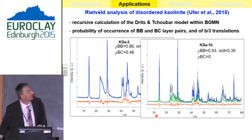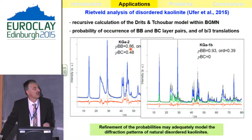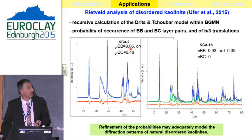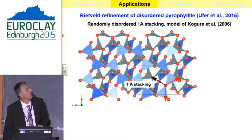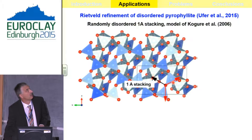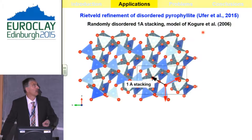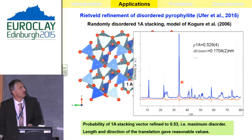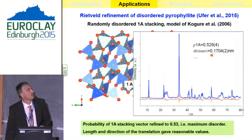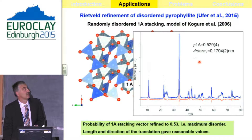Of course we have no standards, so we do not know if these are true values, but this makes us able to describe natural kaolinites. A very similar, identical approach can be done for pyrophyllite. The disorder of pyrophyllite consists in deviations from the ideal 1A stacking, as investigated by Kogure and co-workers, by alternative translations. So we can refine the probability of 1A translations and, for example, the length and directions of a translation vector.